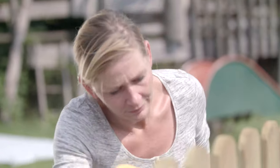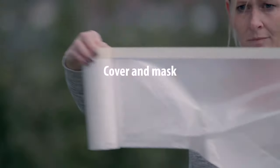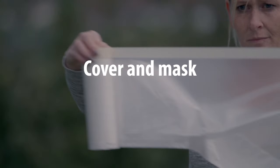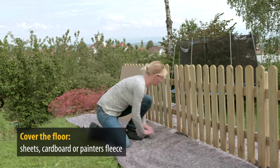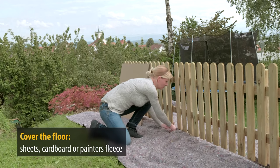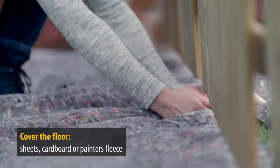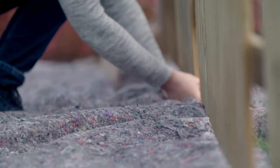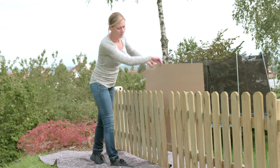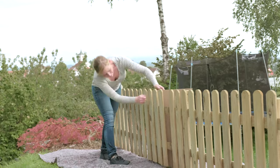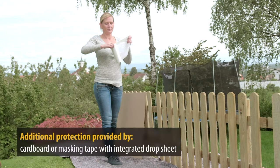Regardless of whether you are brushing or spraying, masking and covering up is essential before any painting process. First, we cover the floor with painter's fleece or cardboard. In addition, a cardboard box can be held behind the fence, or we use this masking tape with an integrated drop sheet.